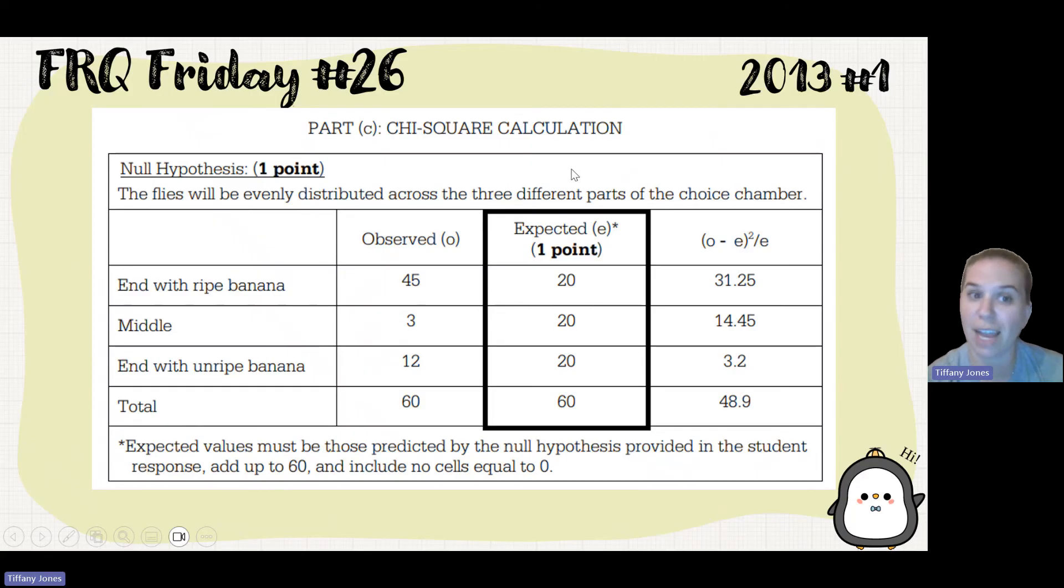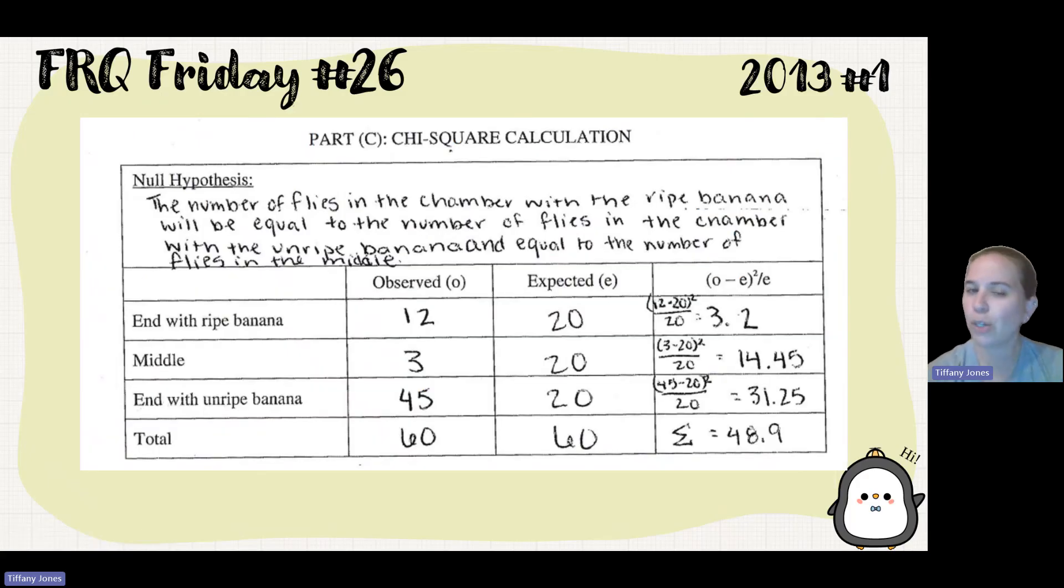Students were also able to get their expected point, even if they didn't have their null correct, as long as the expected matched whatever they had in their null hypothesis. So students said the number of flies in the chamber with the ripe banana will be equal to the number of flies in the chamber with the unripe banana and equal to the number of flies in the middle. And they also got points for having 20, 20, 20 down there.